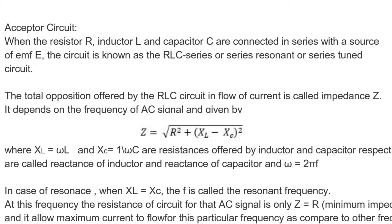Where XL is equal to omega L and XC is equal to 1 upon omega C are resistances offered by inductor and capacitor respectively, are called reactance of inductor and reactance of capacitor, where omega is equal to 2 pi F where F is the frequency.